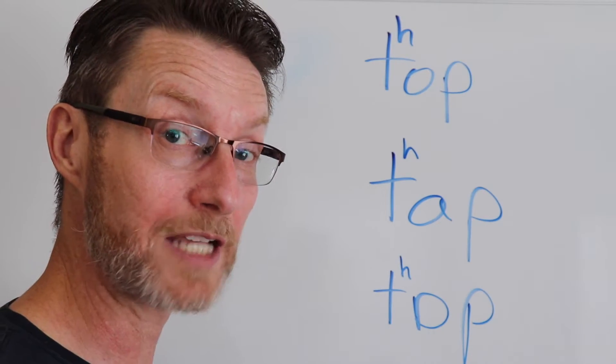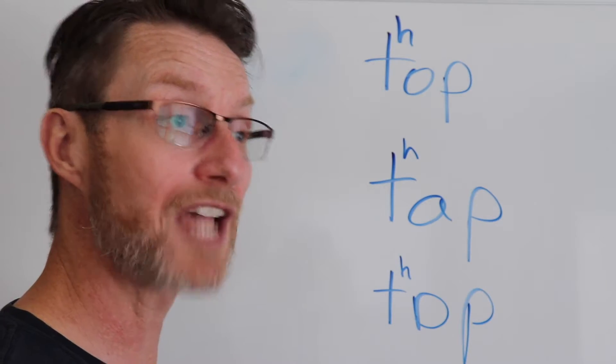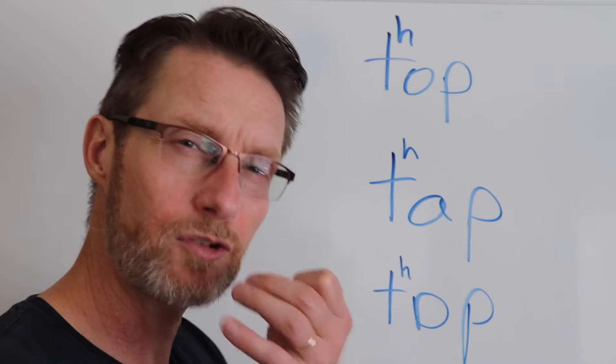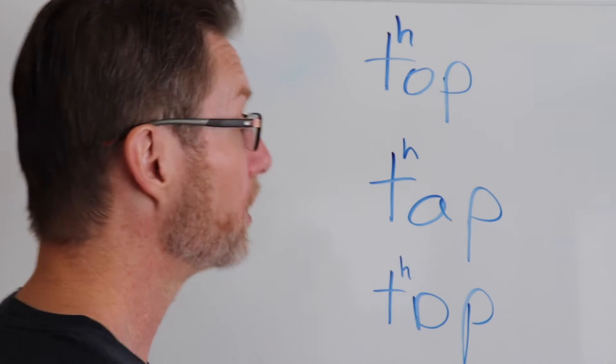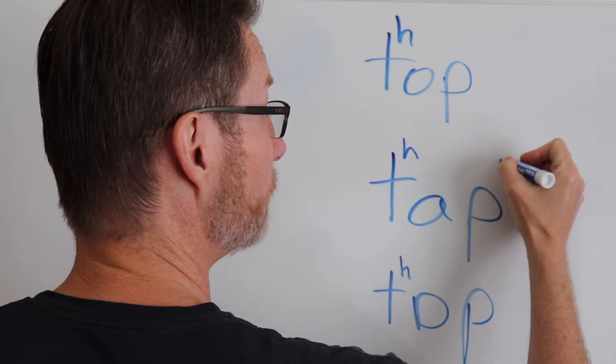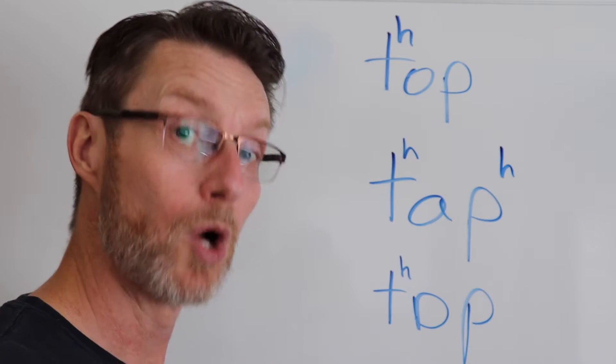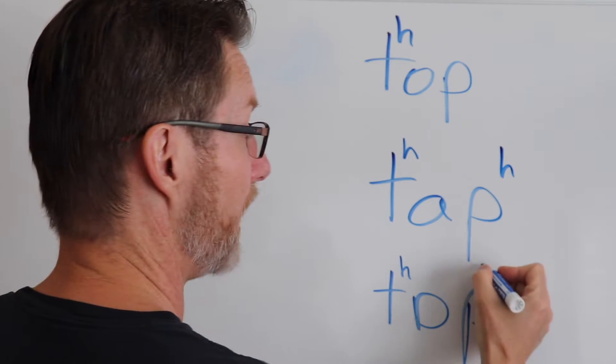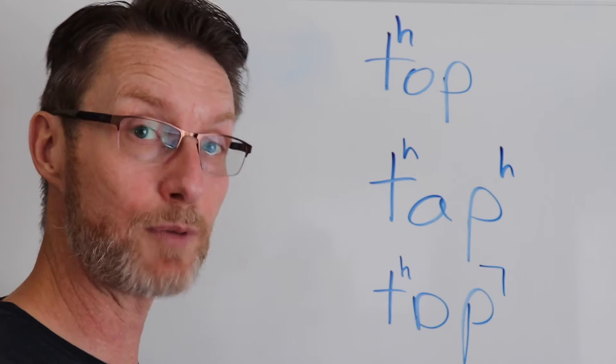Now, a lot of people won't do an aspiration on the P. They will go 'top,' where they sort of make a P but don't explode it. You can either suggest that it's also getting exploded, or you could suggest that it has this stop quality to it.